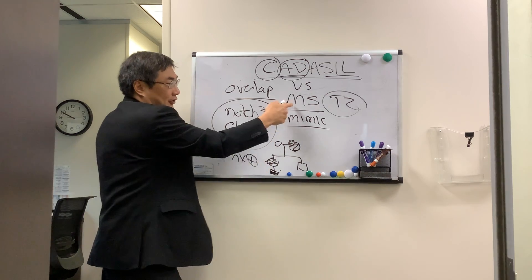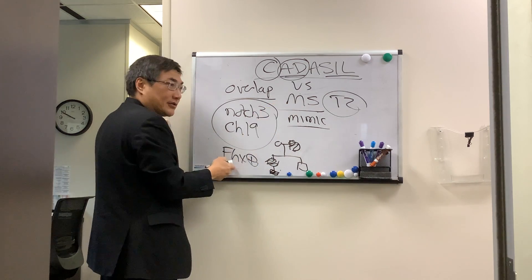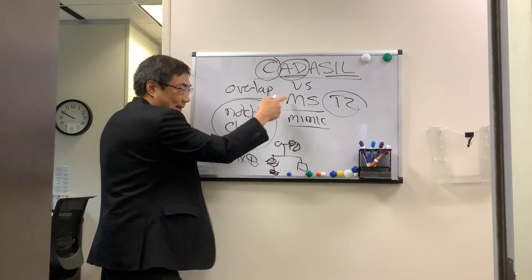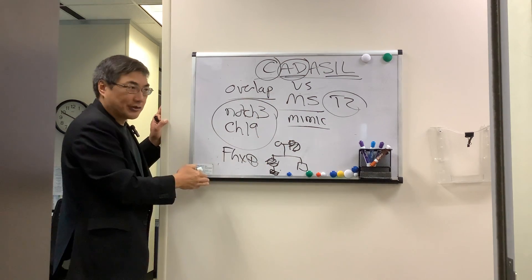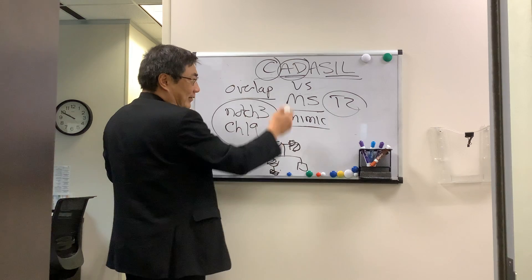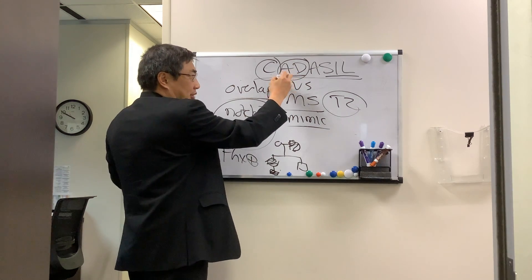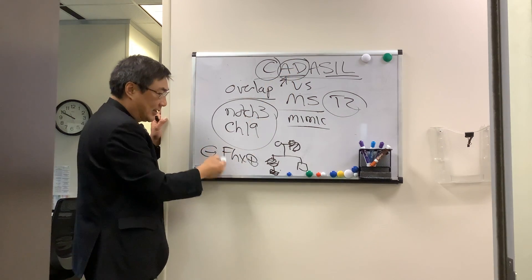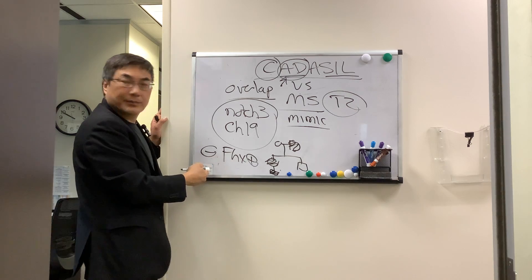However, some MS patients have family histories that are positive, even though MS doesn't have a single gene and doesn't follow autosomal dominant inheritance. So you need to draw out the pedigree for autosomal dominant conditions, even though a negative family history doesn't exclude CADASIL.